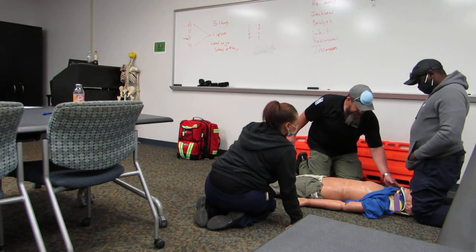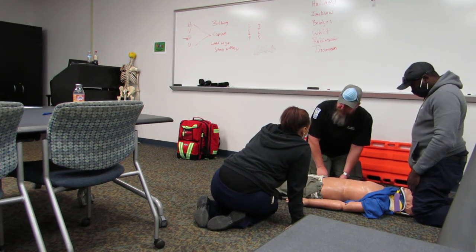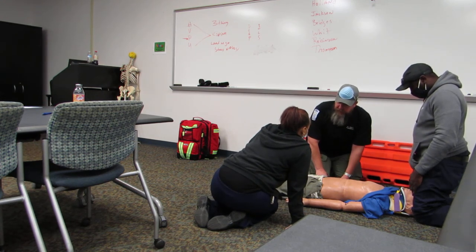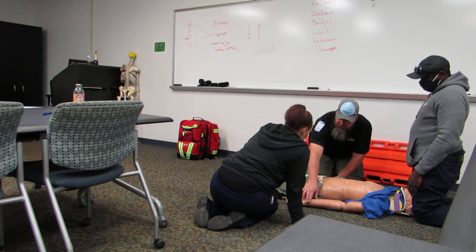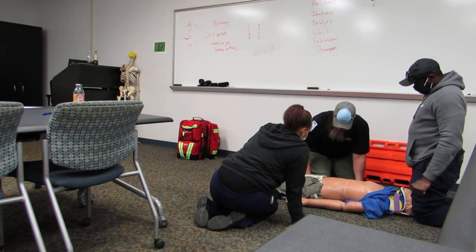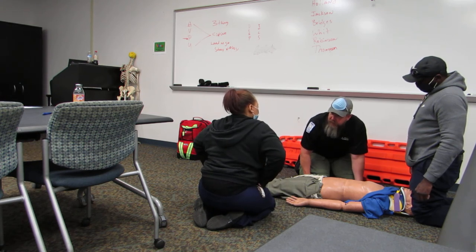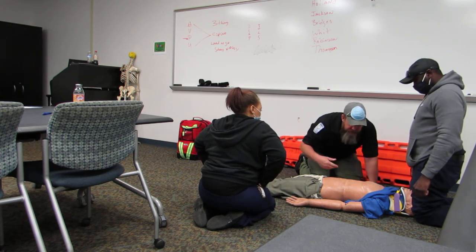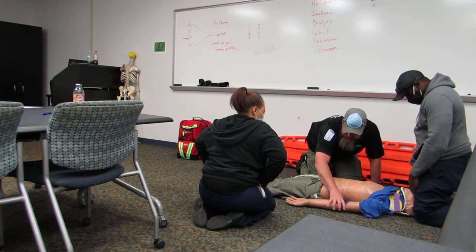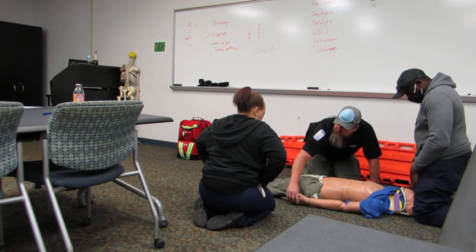Then we're going to move up to the arms — DCAP-BTLS, get a pulse. I like to do them both at once, check to see if I get any reaction: pulse, motor, sensory. Then come down here, DCAP-BTLS, pulse motor sensory again.